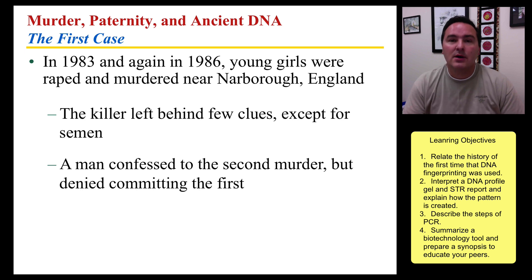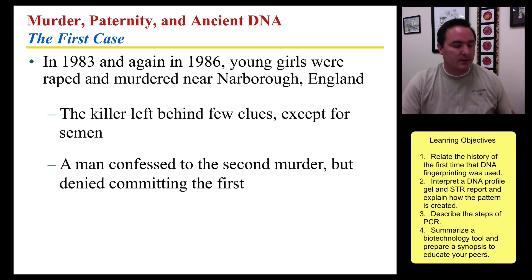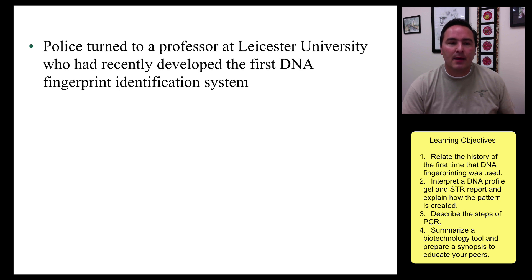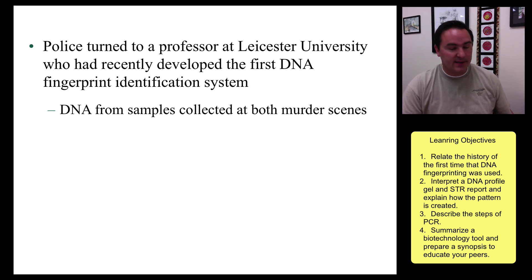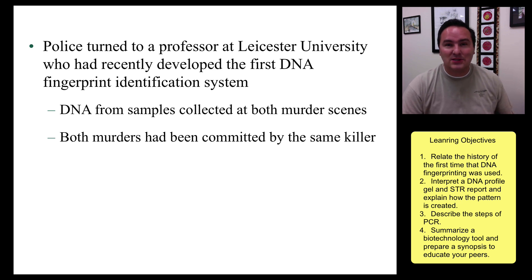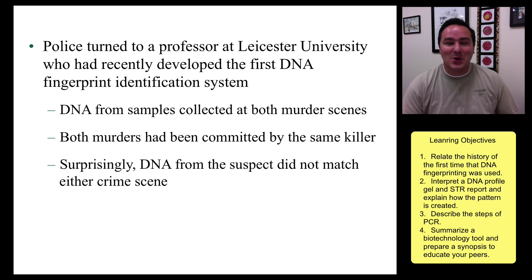Then in 1986, the same type of rape murder occurred, and they collected the rape kit again. This time, a man confessed to the second murder, and so they wanted to pin the first murder on him as well. They decided to go to a nearby university where a professor was developing a method of DNA profiling — sometimes called DNA fingerprinting. He ran the samples and came back with results saying that the DNA from both murder scenes was from the same person, but it was not the suspect they had. For whatever reason, the suspect had confessed to the second murder and rape even though he didn't do it.